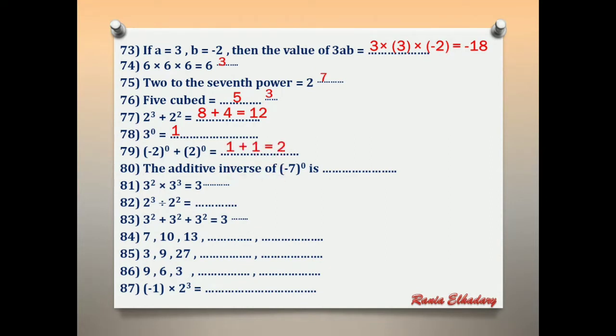Number 80: the additive inverse of (negative 7) power 0. First, solve (negative 7) power 0, which equals 1. Then find the additive inverse of 1. Since 1 is positive, the additive inverse is negative 1.